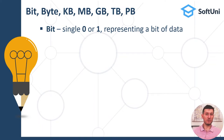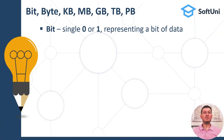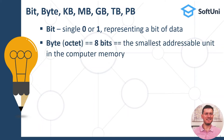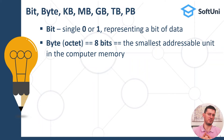Bits hold a single value, 0 or 1, representing a very small portion of data. The bit is the smallest data unit in computing. Bytes, which are also known as octets, consist of 8 bits. These 8-bit groups are the smallest addressable units in computer memory, or at least for most computers.